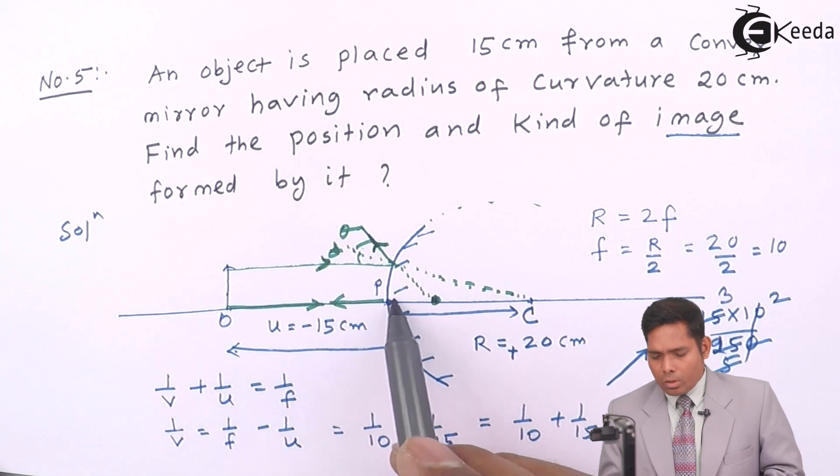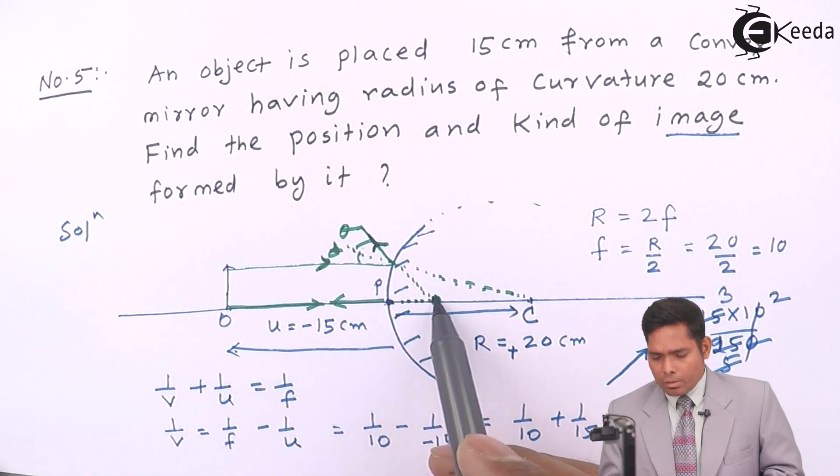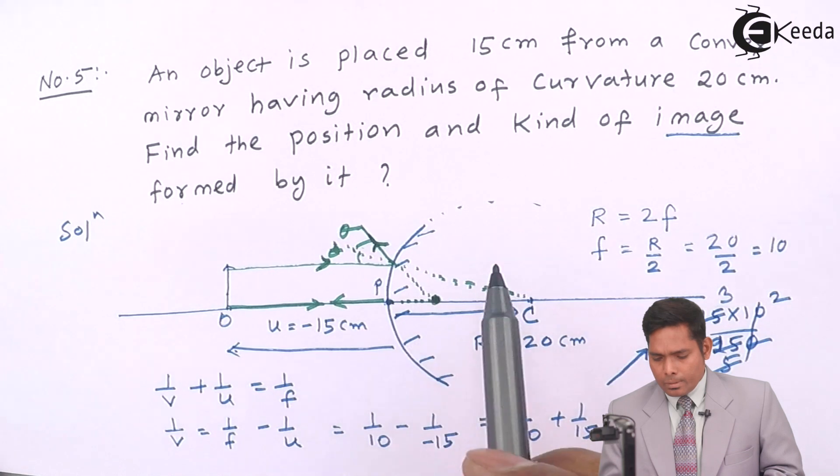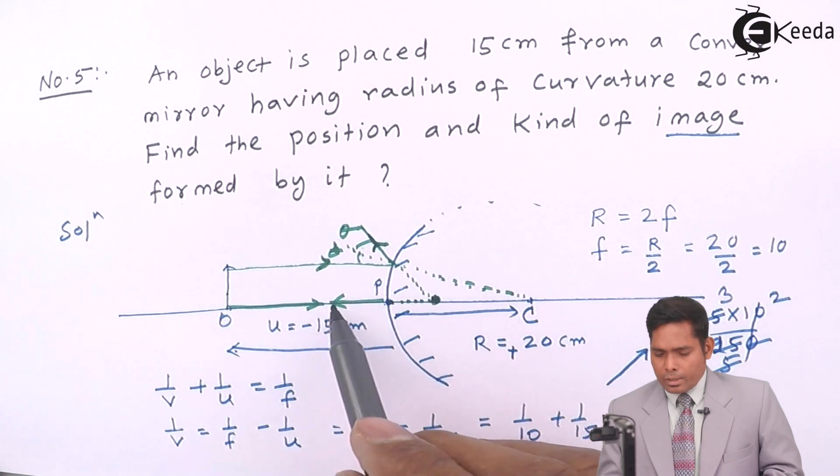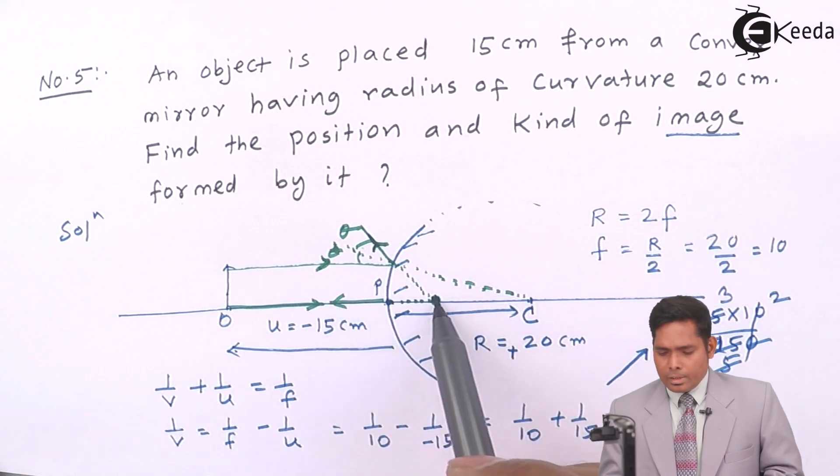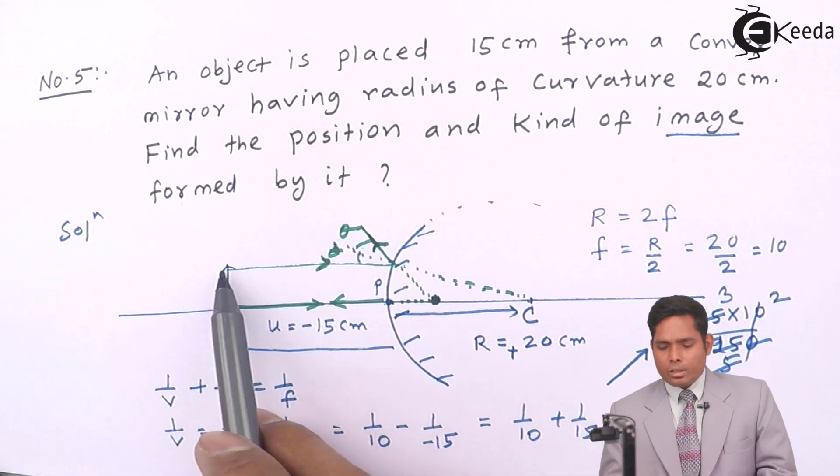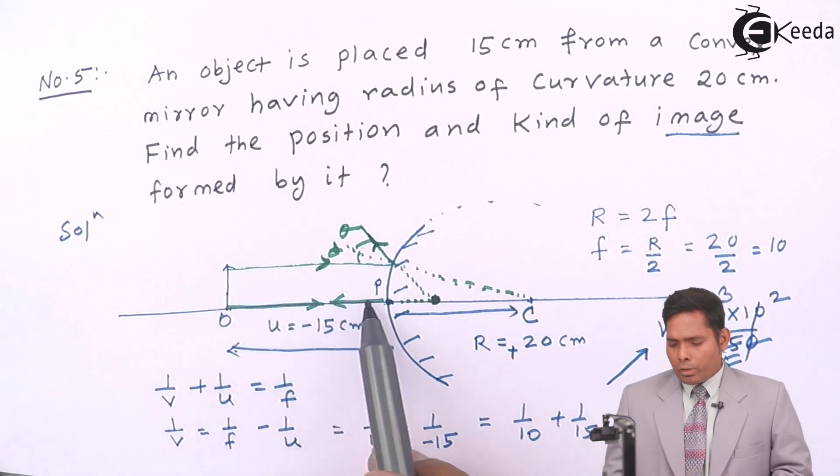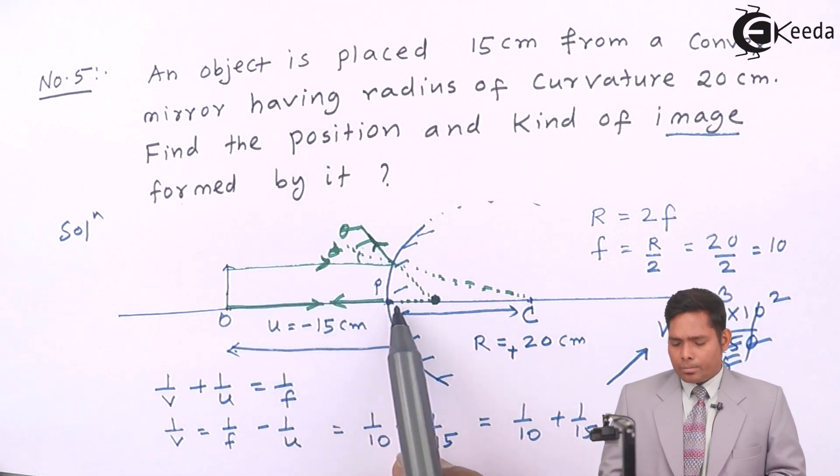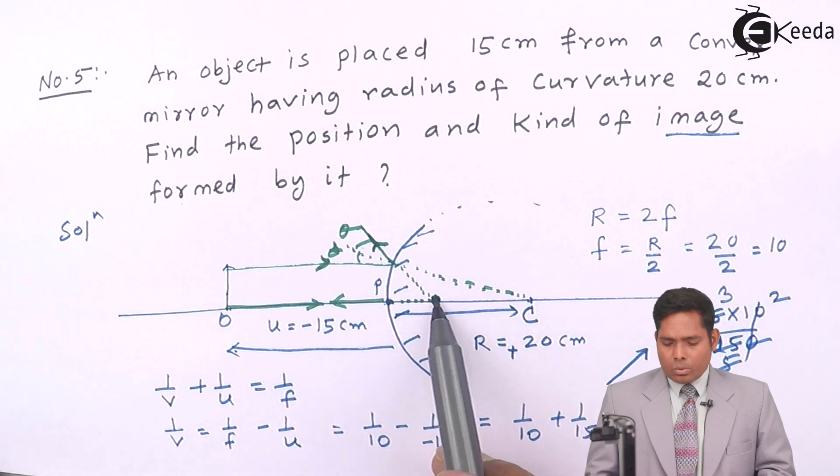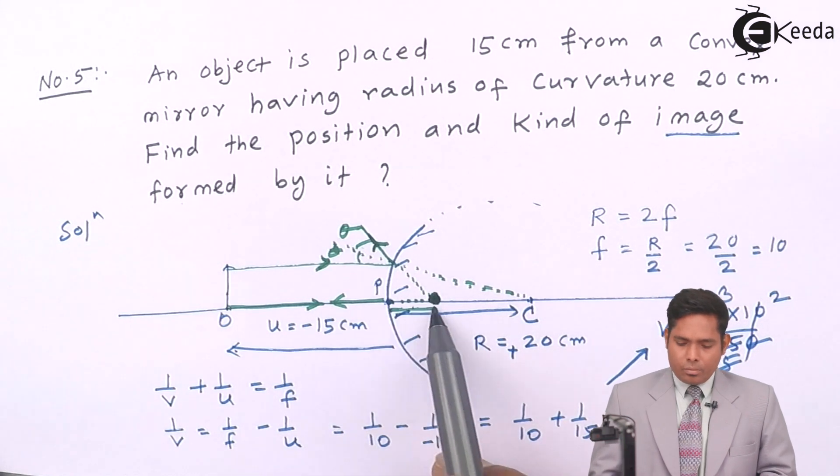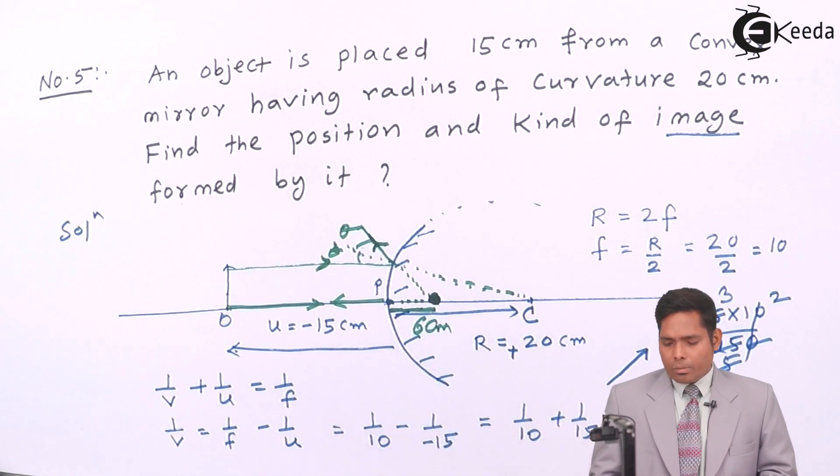The ray follows the laws of reflection. This angle is theta, this angle will also be theta. The ray falling like this will be reflected back from the mirror like this. If you extend that, it will meet here. And this ray coming, this is a case of normal incidence, will just get reflected back.